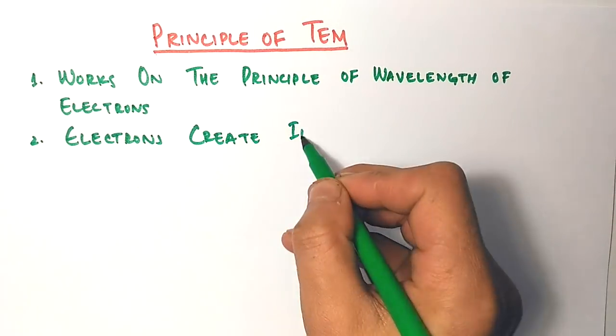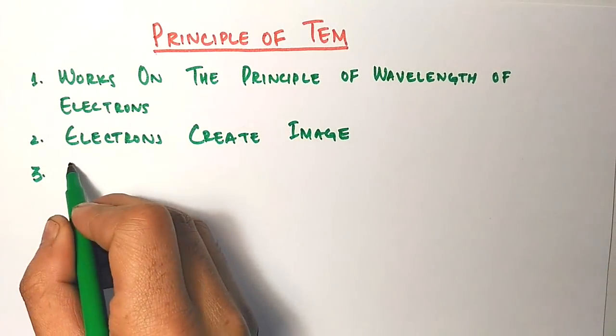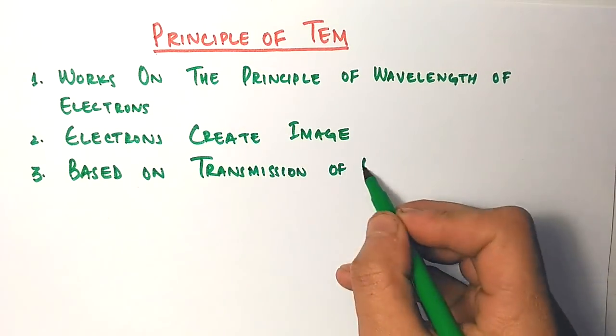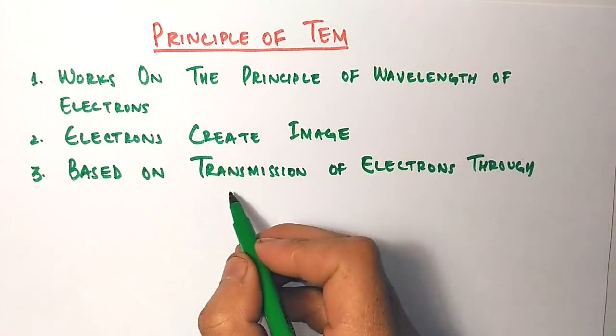Second, electrons create the image, not photons or light. Third, it is based on the transmission of electrons through the object.